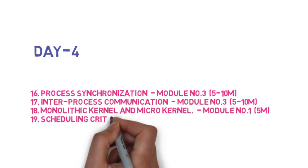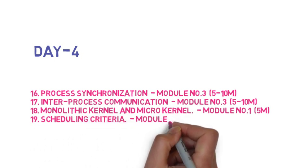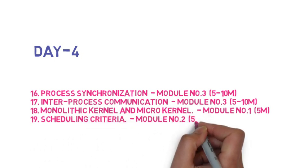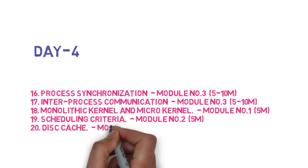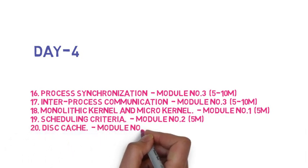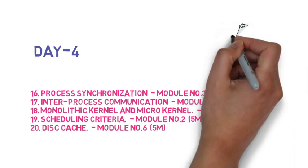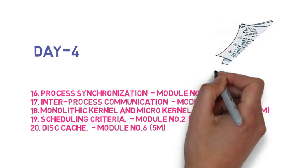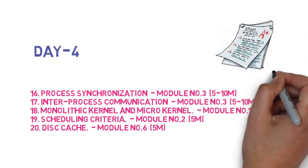The nineteenth question is: discuss various scheduling criteria, which can come for 5 marks. The twentieth and last question is: explain disk cache, also for 5 marks. So these are your 20 questions which will help you not only pass but score well.